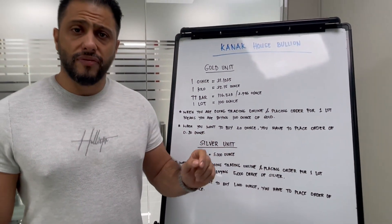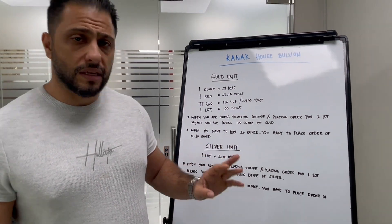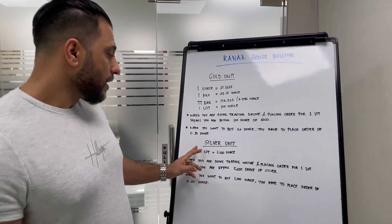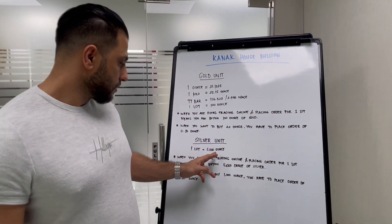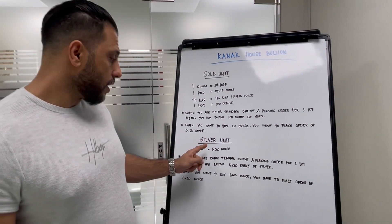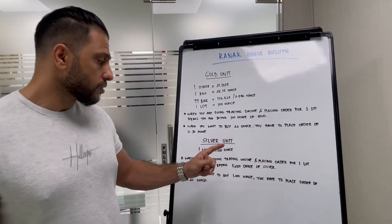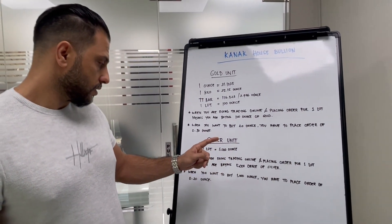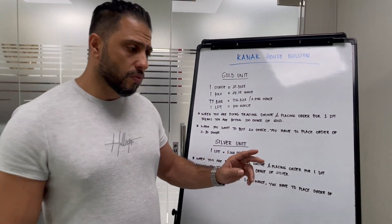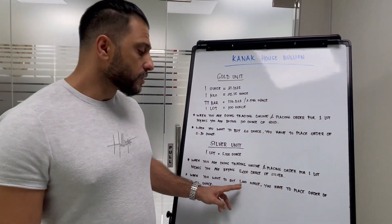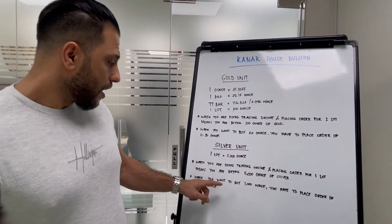The silver standard lot is equal to 5,000 ounces. So when you are placing one lot, you are buying 5,000 ounces. For example, if you want to buy 1,000 ounces of silver,